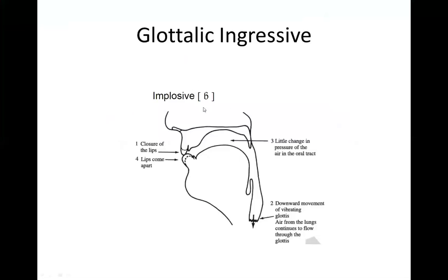This diagram shows a schematic of how an implosive is produced — this particular one is for a 'b' sound produced with a glottalic ingressive air mechanism. The IPA symbol looks like a little 'b' with a curly tail on top. The lips are closed just like a normal 'buh,' but at the larynx you have that downward movement creating higher air pressure below the vocal folds, which leaks upward, and once the lips are released you get that implosive 'buh' sound.